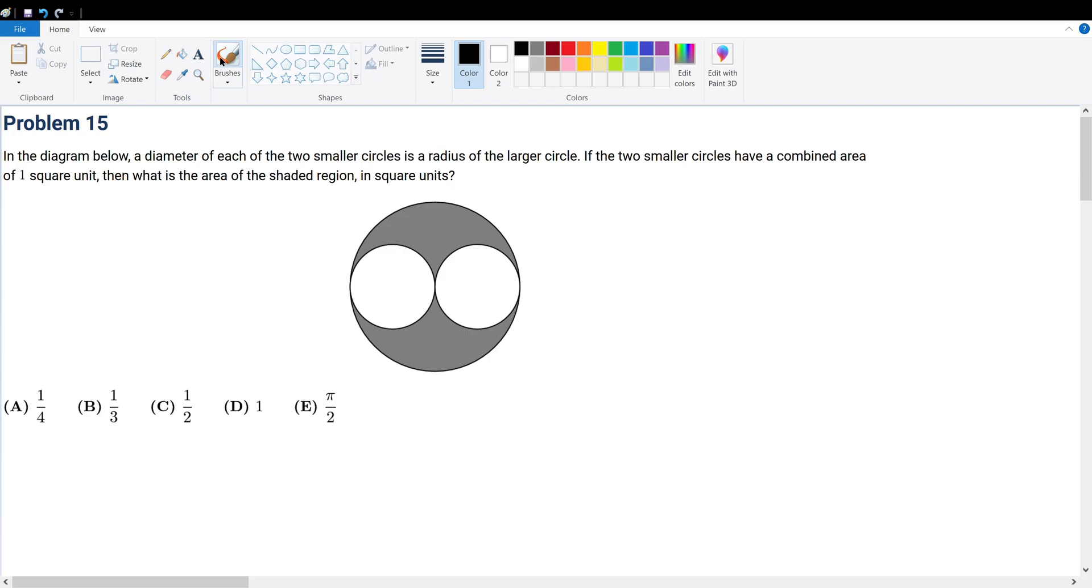Problem 15. In the diagram below, the diameter of each of the two smaller circles is a radius of the larger circle. So that means that they must touch at the center point right here.